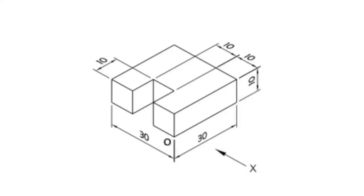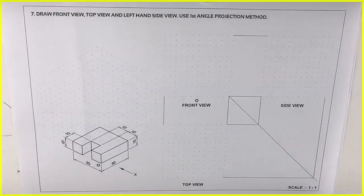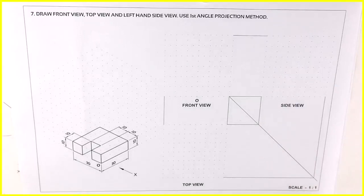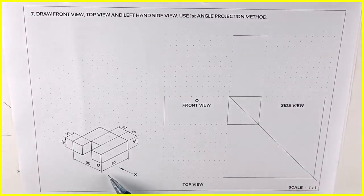Welcome to technical drawing. In this video I will show you how to draw dotted lines in orthographic view. First, we will draw front view, top view, and left hand side view in first angle method. The length is 30.